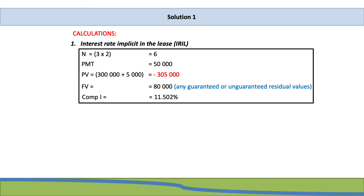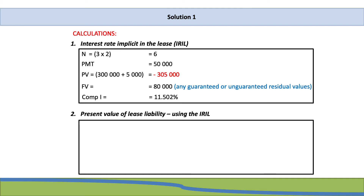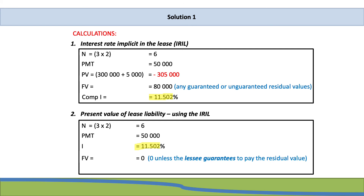Now that we have the interest rate implicit in the lease, we can calculate the present value of the lease liability. N is still 6, payment is R50,000, and the interest rate is 11.502%. Our future value is zero, because it was an unguaranteed residual, meaning nobody has guaranteed this amount. The only time there will be an amount at future value is if the lessee guarantees to pay the residual value. When we compute PV, we get an amount of R247,802.